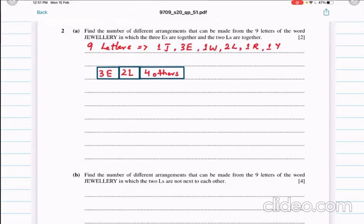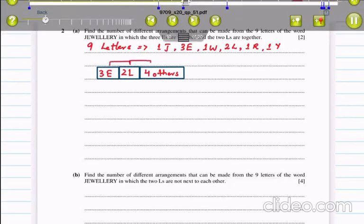They say that 3 E's together and 2 L's are together, so we will have 6 elements. So, 6 factorial into 3 factorial into 2 factorial, but it is repetition. So we will divide by the number of repetitions to get our answer.